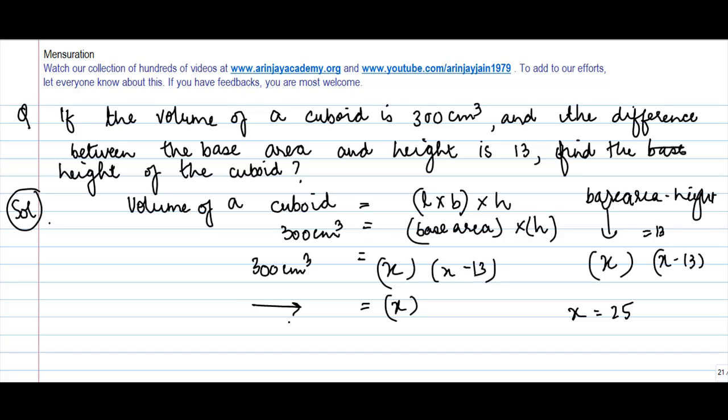How? 25 into 25 minus 13, or 25 into 12, is equal to 300 centimeter cube. So therefore the base area is 25, and the height is equal to x minus 12, or 25 minus 12, is equal to 13 centimeter.